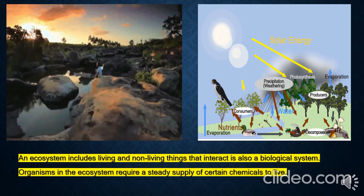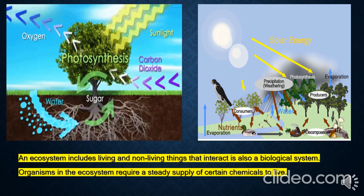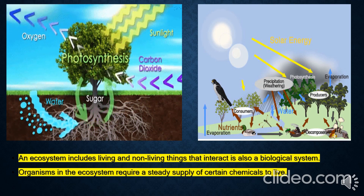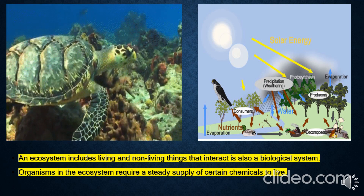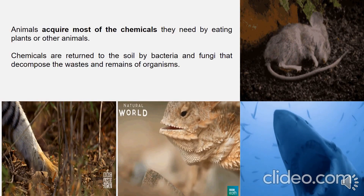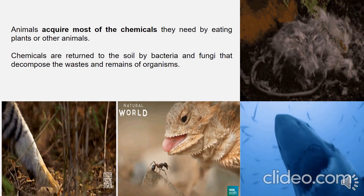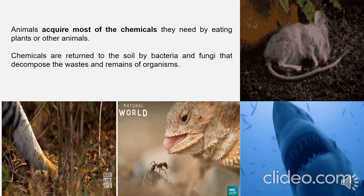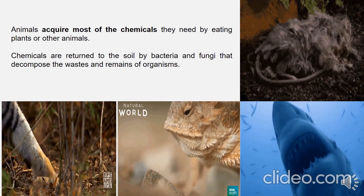Another illustration of a biological system is an ecosystem, which includes living and non-living things that interact with one another. The organisms in the ecosystem require a steady supply of certain chemicals to live. For example, plants obtain energy chemicals from the soil, water, and air. Animals acquire the chemicals they need by eating plants or other animals. Chemicals are returned to the soil by bacteria and fungi that decompose the waste and remains of organisms.